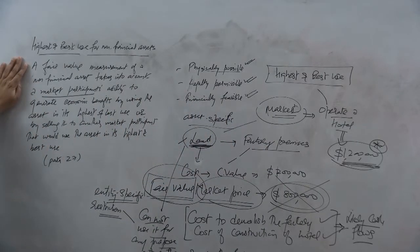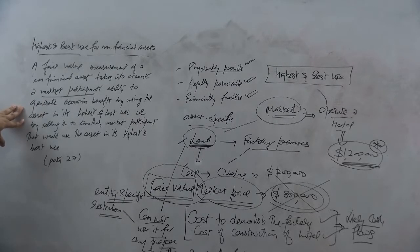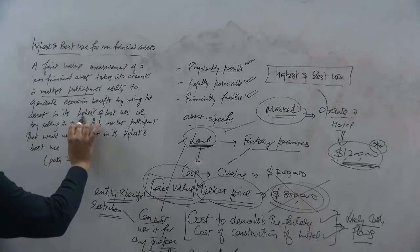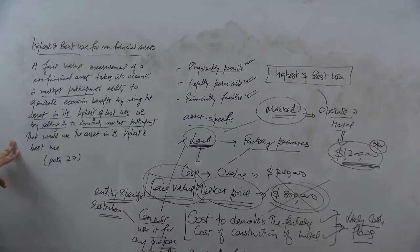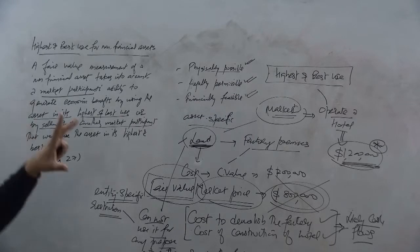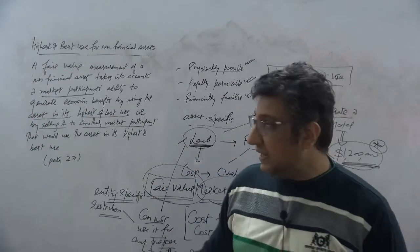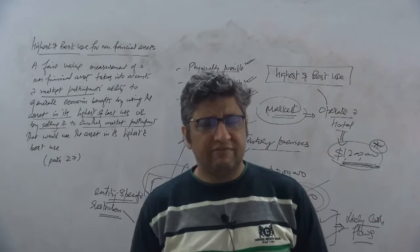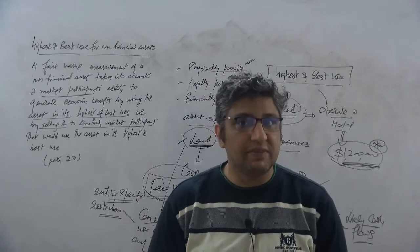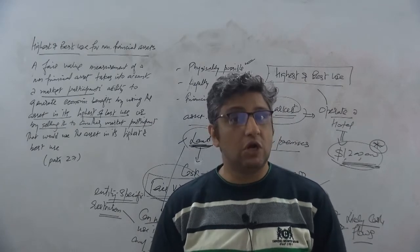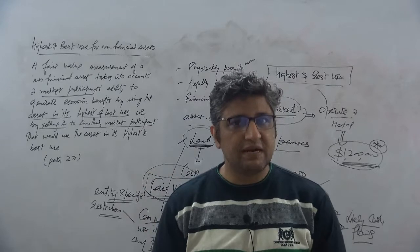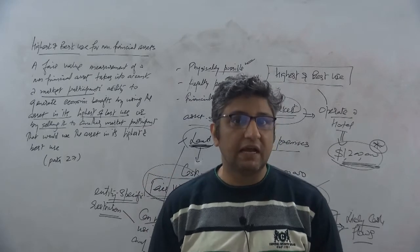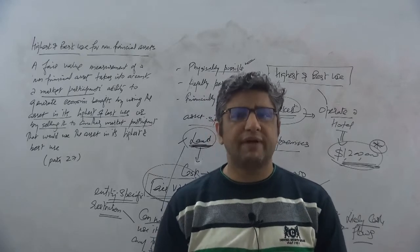Again, if I go back, a fair value measurement of a non-financial asset takes into account a market participant's ability to generate economic benefits by using the asset in its highest and best use or by selling it to another market participant that would use it in the highest and best use. We normally say, normally believe that the current use, like in this case, land to be used for operating a factory, the current use is presumed to be highest and best use. But many a times, that would not be the case. So, you have to rely on that external factor, rely on that most transparent factor to arrive at the accounting for this piece of land or any non-financial asset.